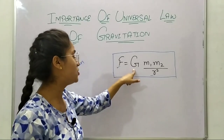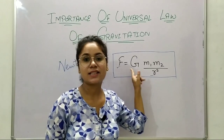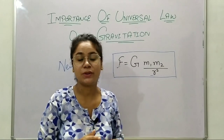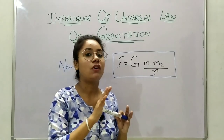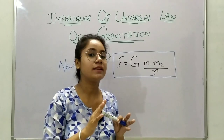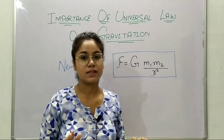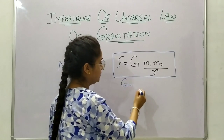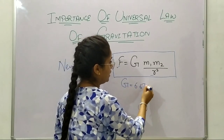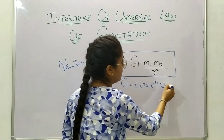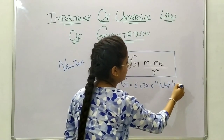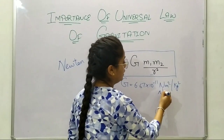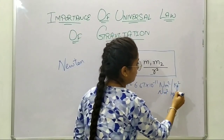This G — this big G — is the Universal Gravitation Constant, which is the same for all celestial bodies and all terrestrial bodies in the whole universe. The value of G is 6.67 × 10 to the power negative 11 Newton meter squared per kg squared, or Newton meter squared kg to the power negative 2.